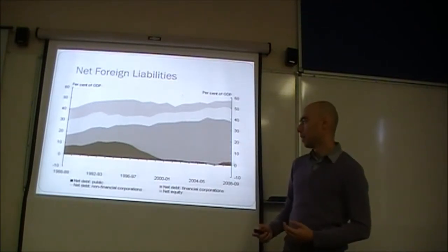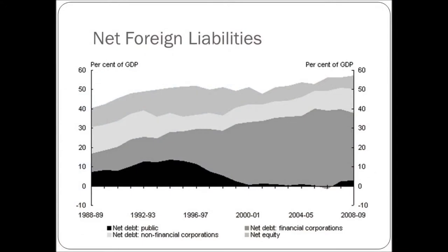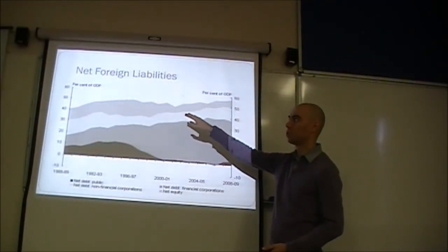Looking at net foreign liabilities over the last 30–35 years: the black segment at the bottom represents net public debt. As mentioned in the previous lesson, the government no longer borrows from overseas, but it used to — accounting for about 10% of GDP. That's come down, but there's a crowding out effect: when the government borrows from domestic sources, those savings are no longer available for private firms, so private firms go overseas — which is why net foreign liabilities have been maintained or increased.